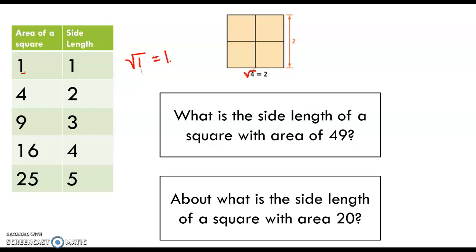It's the number that multiplies times itself to give you 1. It's always the positive number that multiplies to give you 1. This diagram shows a square with an area of 4, so the side length of that square would be 2. That's why the square root of 4 is 2.